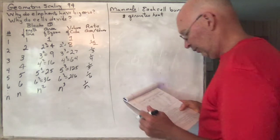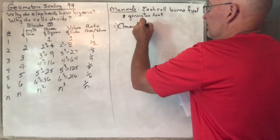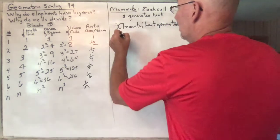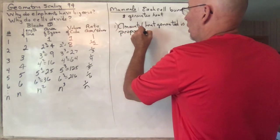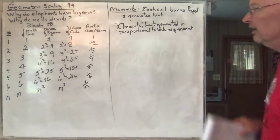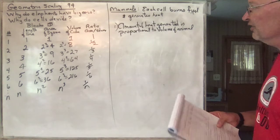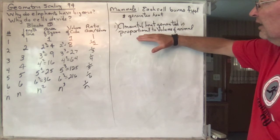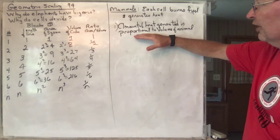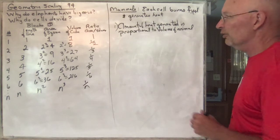Here's what we can conclude from that. The amount of heat generated is proportional to the volume of the animal. The whole animal is built up of cells — your muscles, your organs, your skin, all that stuff is cells. So the amount of heat that's generated by your body is proportional to the volume. As the volume doubles, the amount of heat generated is going to double, because each one of these little cells just generates its own little bit of heat.